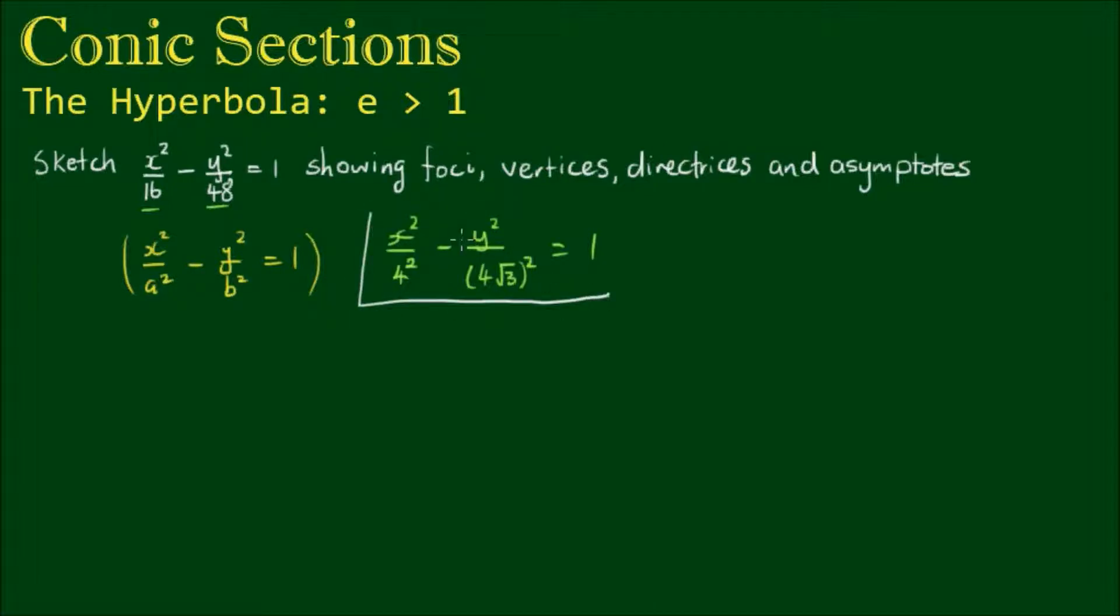So from this equation, let's first find the vertices. And the coordinates of the vertices are given by (±a, 0). So here we have a equal to 4. So the vertices are (±4, 0).